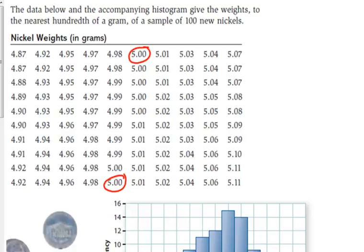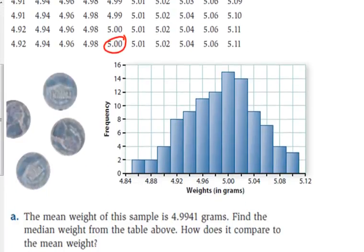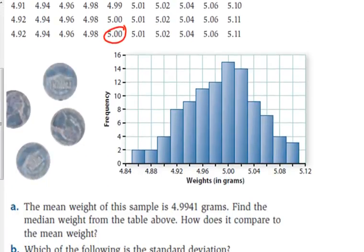So the median is 5. So the question asks, how does the mean compare to the median? Well, the mean is slightly less than the median. The median is 5, the mean is slightly less.